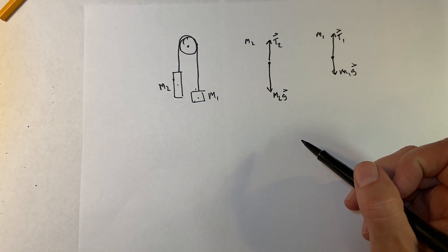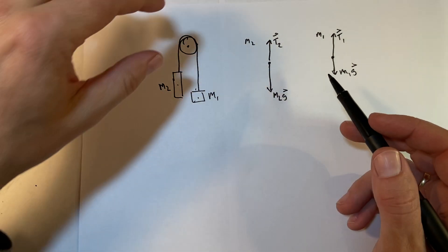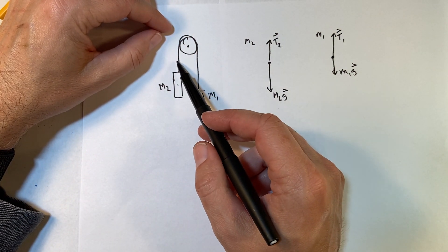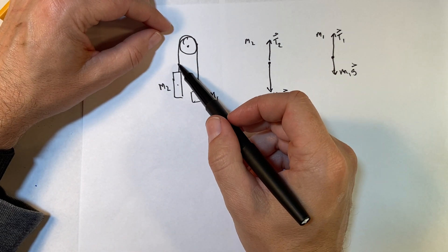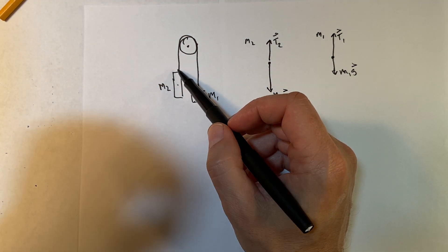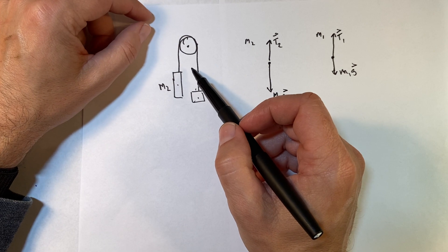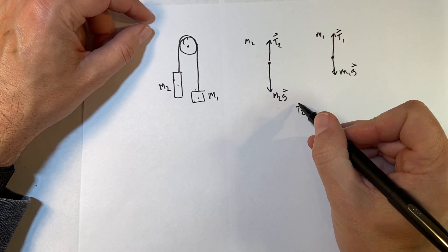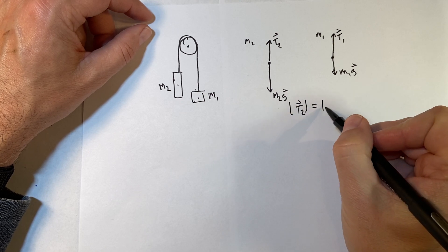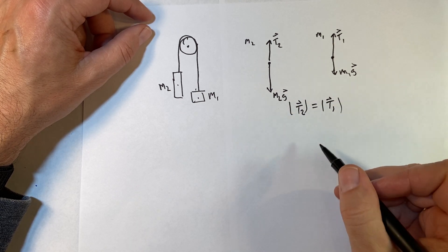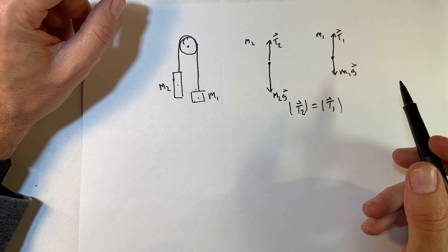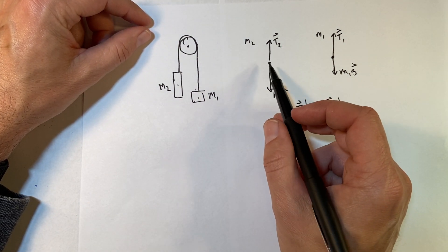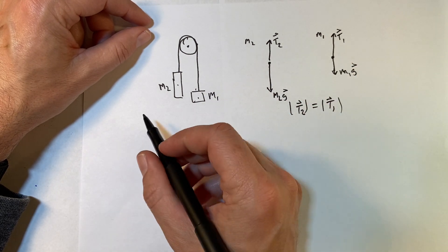There is something important about this string. If the string has no mass, then the tension on this part of the string is the same at all other parts of the string. So that means the magnitude of t2 has to equal the magnitude of t1. They don't have to pull in the same direction — even though they are in this case — but they have to have the same magnitude. These forces are only in the y direction.